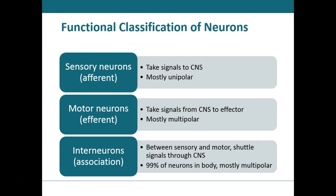Motor neurons are efferent — 'E' for exit — taking action potentials away from the central nervous system to effectors, which are muscles and glands in the peripheral nervous system, through cranial or spinal nerves. Most motor neurons are multipolar in structure. Interneurons, or association neurons, are mainly located within the central nervous system between the sensory and motor neurons. They integrate and process incoming sensory information and then elicit a response through motor activity. Most interneurons are multipolar and make up about 99% of the neurons in the body.